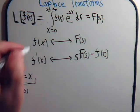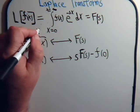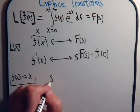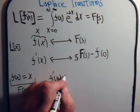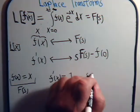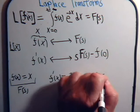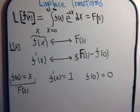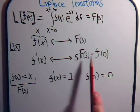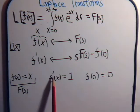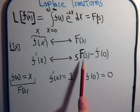For this problem, f(x) is just x and that's its corresponding Laplace transform. Now f'(x) is of course just 1, and f(0) is just 0. Let's take the Laplace transform of this. What is it equal to for f'(x)? This is our formula right here. For this particular problem, f(0) is zero, so the Laplace transform of this is going to be s times f(s).